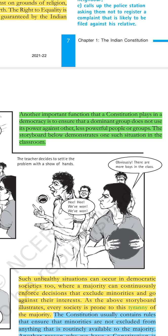Another important function that a constitution plays in democracy is to ensure that a dominant group does not use its power against others. Our constitution ensures that no strong group uses its power against less powerful or other groups. No group can be too dominant over others.